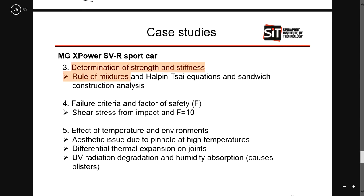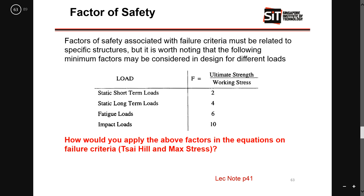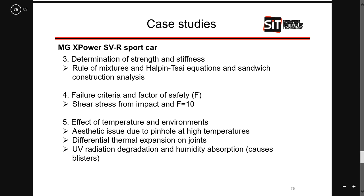For determination of strength and stiffness, they use the methods discussed previously — you can find those in my playlist. The failure criteria involves a safety factor of F equals 10. This is because when designing a car you are concerned with impact loads. Whenever you design a vehicle you need to account for impact loading, because cars can crash, and you need to take that into consideration in the safety factor.